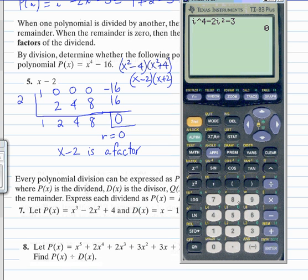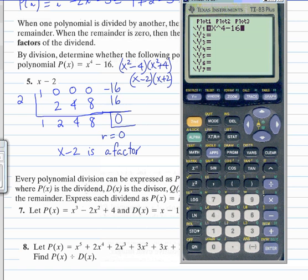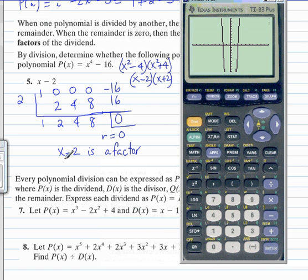If we wanted to check it with the graphs, we put x to the 4th minus 16 in our graph, and x equals 2, this is when you set this factor equal to 0, should be one of our x intercepts, one of our solutions. And you can see that it is. Press trace and put 2 for x, and we do get a 0.